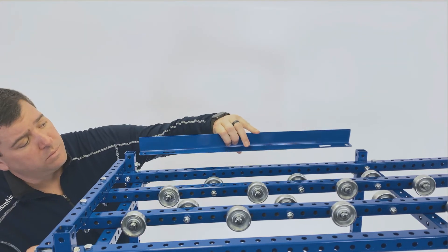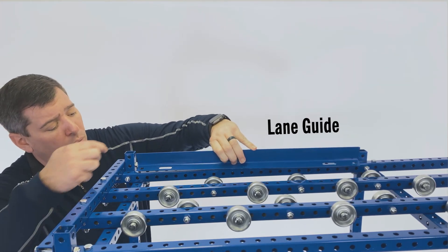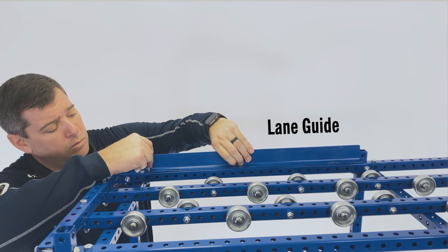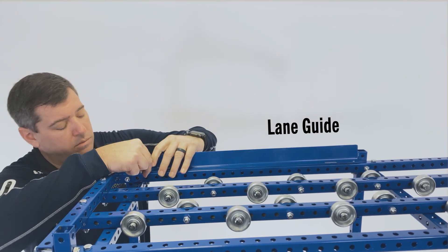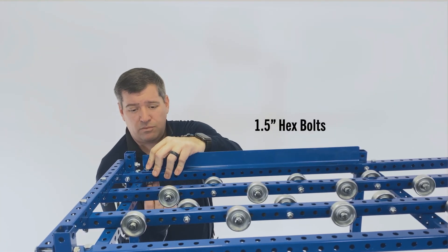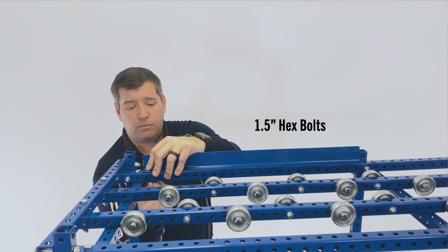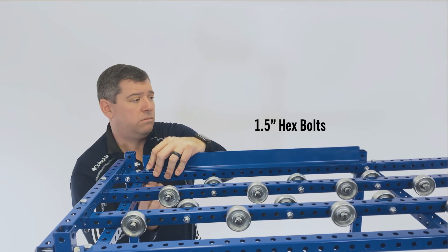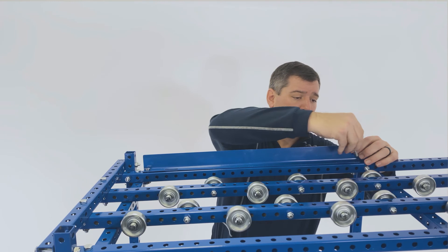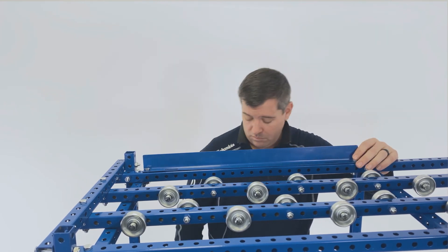Install eight lane guides using one and a half inch long, 5/16 inch hex bolts. Lane guides help the part, box, or bin flow in a straight line. Lane guides can be reversed if required to create a narrower lane.